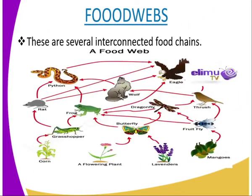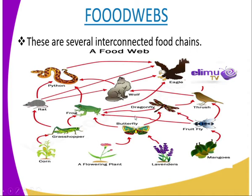From food chains, we can move further to food webs. In a community where populations live and interact, simple food chains rarely exist. Most associations concerned with energy flow are made of several interconnected food chains forming food webs. An example of a food web is the one that you are seeing from our screen, whereby we can have a food chain starting from the corn, which is eaten by a grasshopper. The grasshopper here is the primary consumer, the frog being the secondary consumer and the python being the tertiary consumer. We can form so many food chains from this food web.